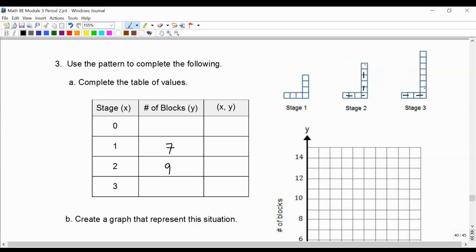Stage 3 has 11. And so now we're going to figure out how does this pattern or table behave or operate. As we think, we'll also fill in these ordered pairs in the third column.